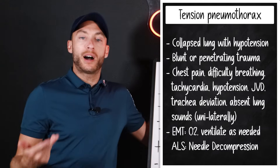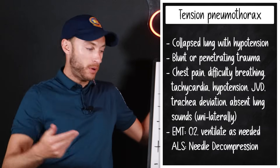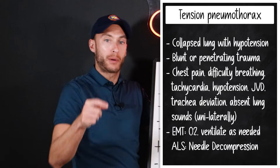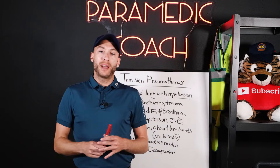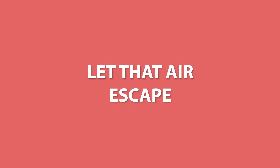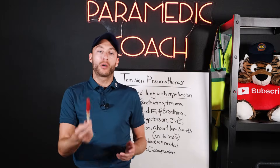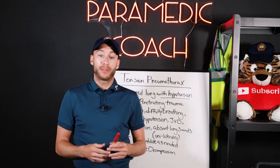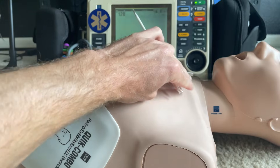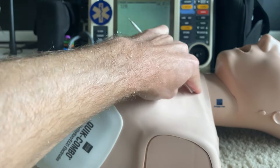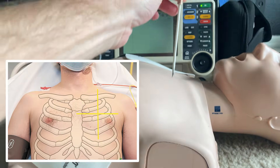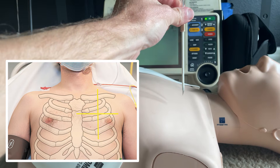At the EMT level, we're going to give oxygen and ventilate as needed. At the ALS level, we're going to do needle decompression. With a tension pneumothorax, all that pressure builds up and collapses the lung — we have to let that air escape. We do that by placing a needle into the pleural space, the space around the lung that's collapsing it. I'm going to put a video here showing the actual procedure and a diagram showing the exact location where you place the needle.